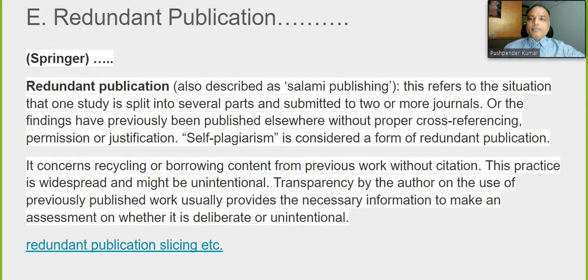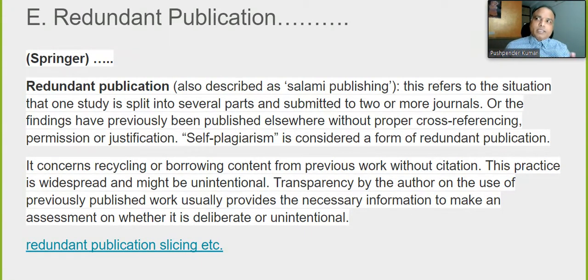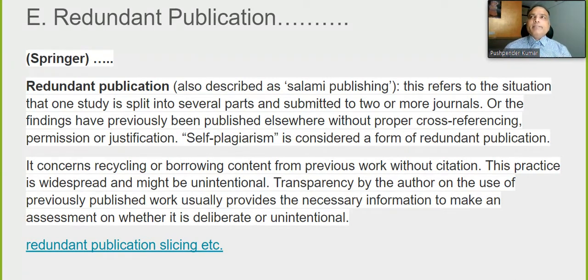According to Springer Publishers, a redundant publication — also described as salami publishing — refers to the situation where one study is split into several parts. You have one full paper and divide it into several parts. For example, if you have done CFA, EFA, and a literature review, and then divide the CFA into different parts and submit to two or more journals, or publish findings previously published elsewhere without proper cross-referencing — that is considered a form of redundant publication, a kind of duplication of your work.